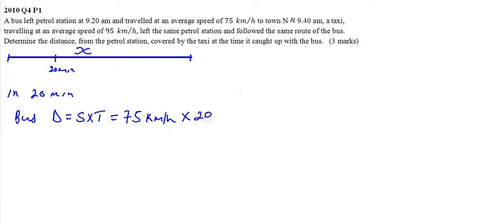So this is 3. 75 divided by 3 gives you 25. This means the bus had covered 25 kilometers.